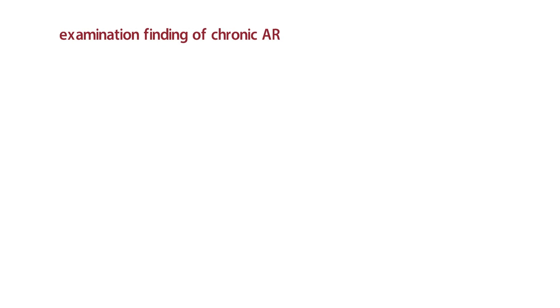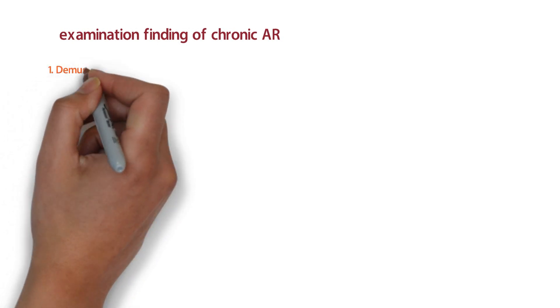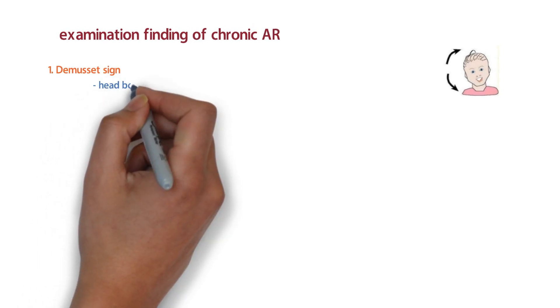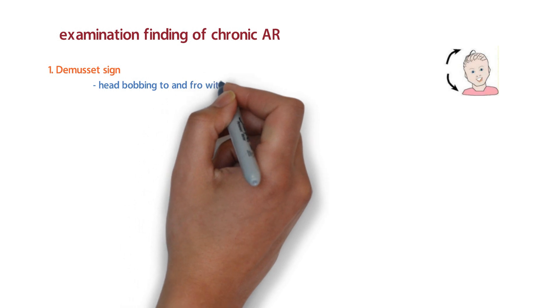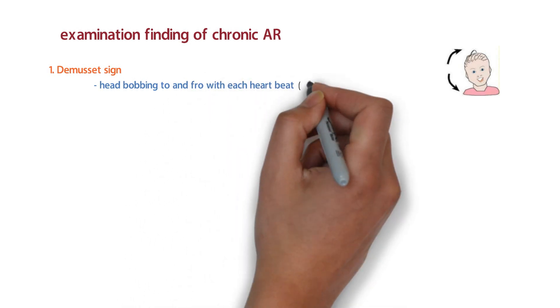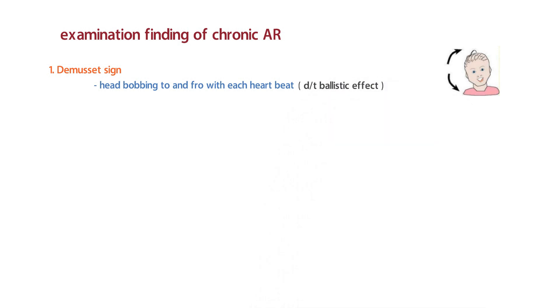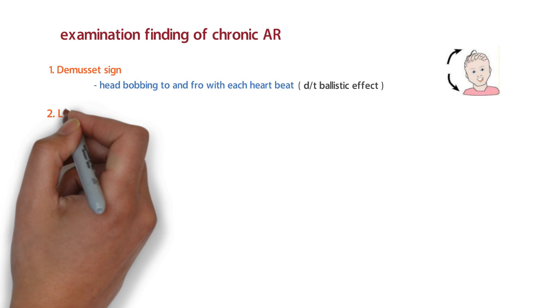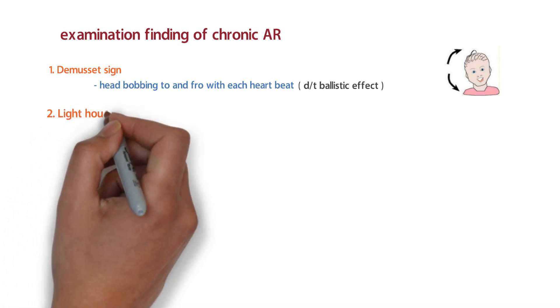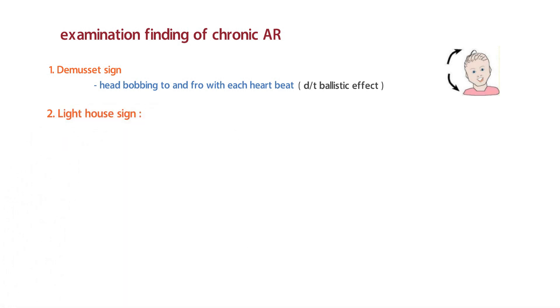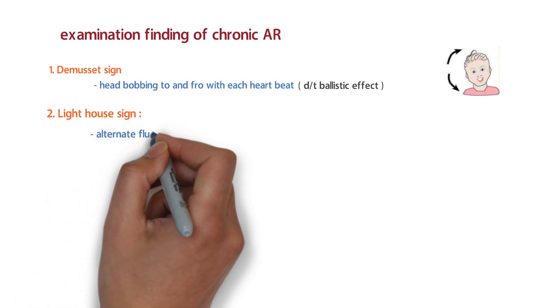We begin with the examination findings of chronic aortic regurgitation, going from top to bottom. The first sign is De Musset's sign, in which there is head bobbing to and fro with each heartbeat, due to the ballistic effect of severe aortic regurgitation. Moving to the forehead, there is also the Lighthouse sign, characterized by alternating flushing and blanching of the forehead.